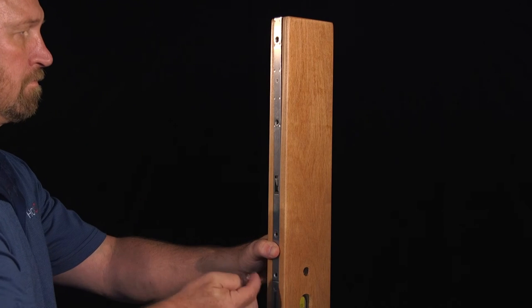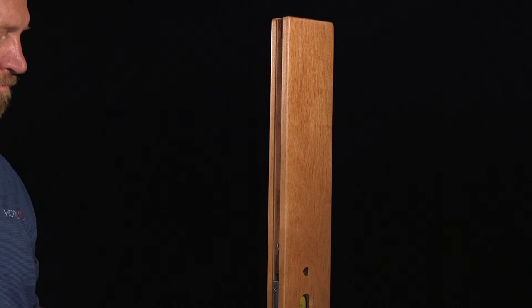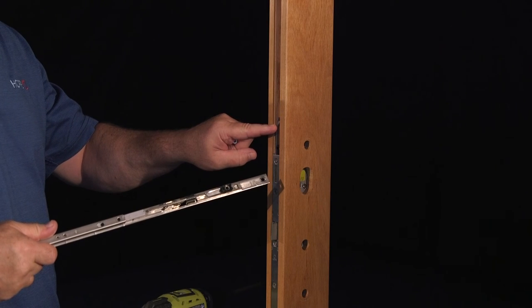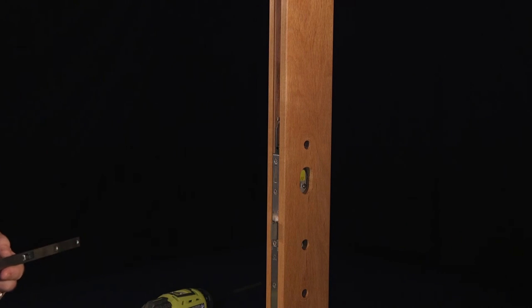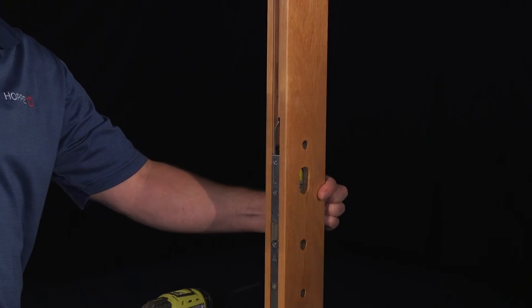At this point, begin removing the top extension from the top edge of the door. Take special note how the drive rail engages with the lock case, as you will need to properly re-engage this when installing the product. When the top extension is removed, your door will look something like this.